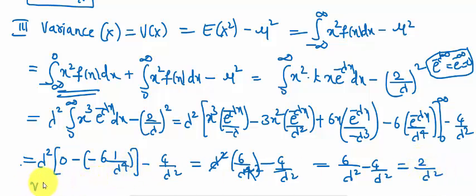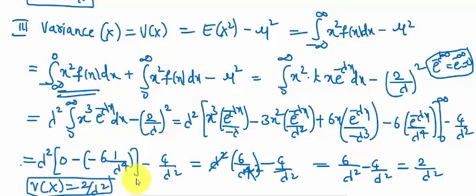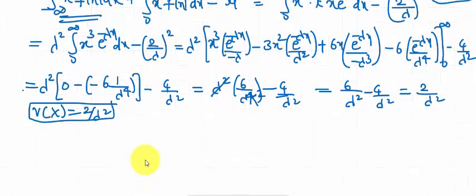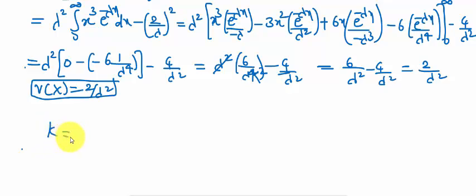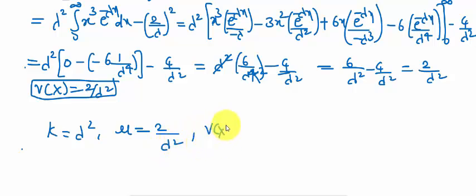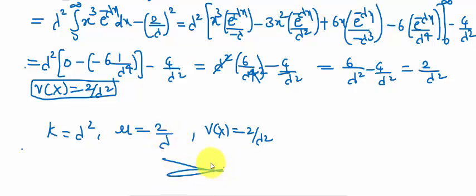Therefore, variance of x = 2/λ². To summarize the results: k = λ², the mean μ = 2/λ (not 2/λ², as corrected), and the variance = 2/λ². This is the complete solution.